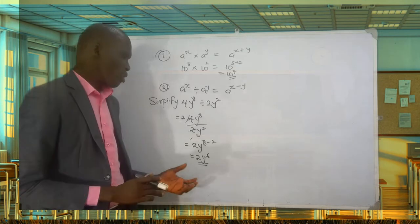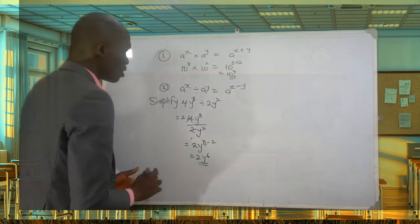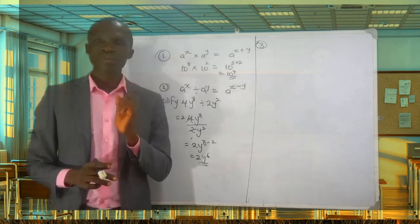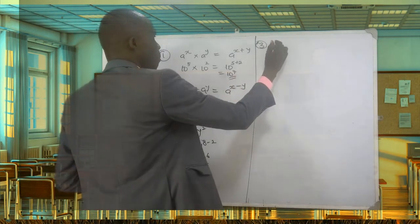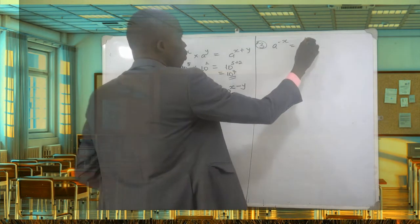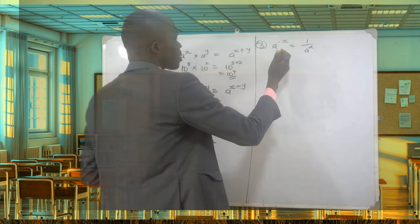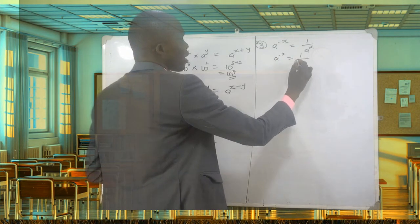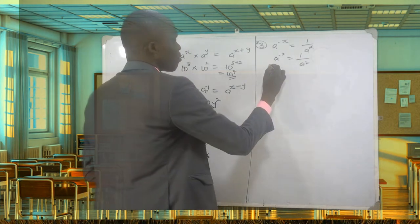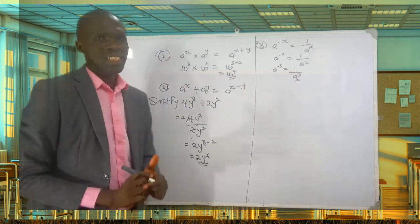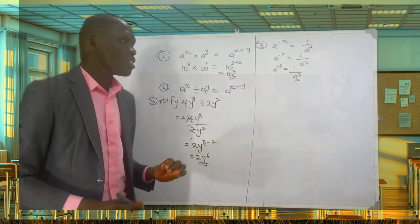The third law states that a raised to power minus x gives you 1 over a raised to power x. For example, a raised to power minus 2 gives you 1 over a squared. Similarly, a raised to power minus 3 gives you 1 over a cubed. This is the application of the third law.